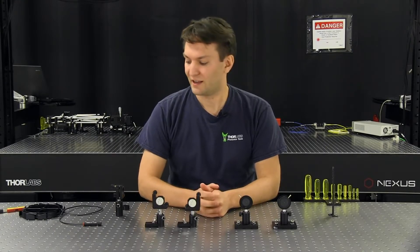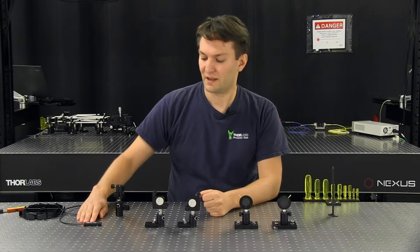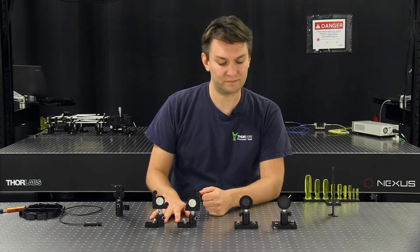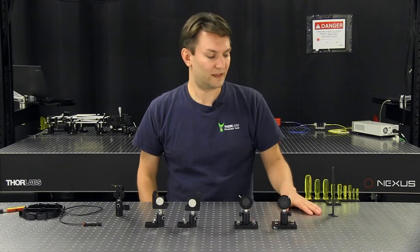For today's demonstration, I have a collimated laser diode package, a few kinematic mounts, two that have mirrors already mounted on them, two irises, and a ruler.